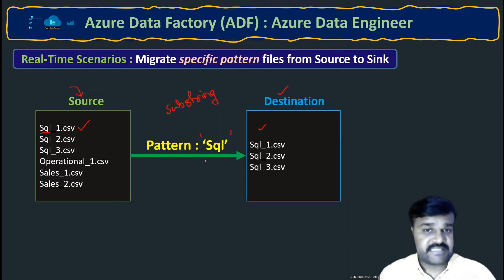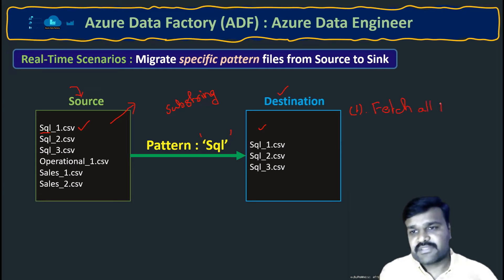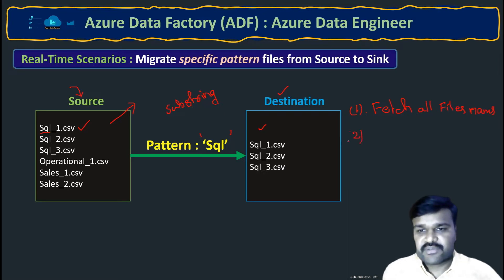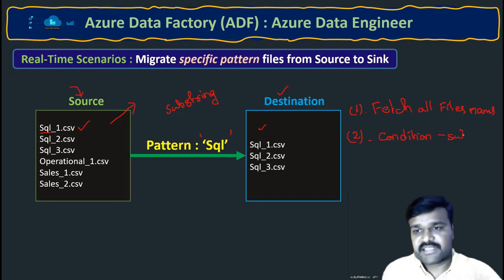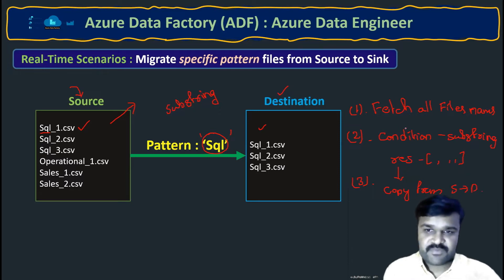How do we design an ADF pipeline to migrate these specific pattern files to the destination? Step one: fetch all the file names from the source folder or container. Step two: write a condition — whichever file names have the mentioned pattern as a substring, select only those. Step three: copy only those files from source to destination.